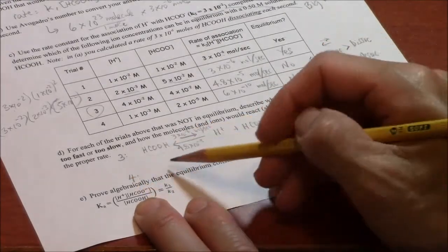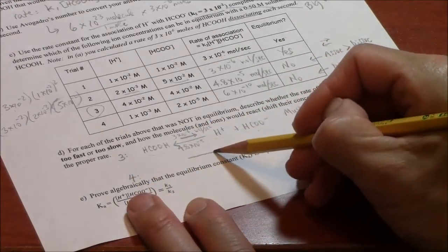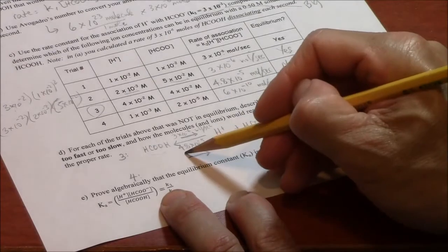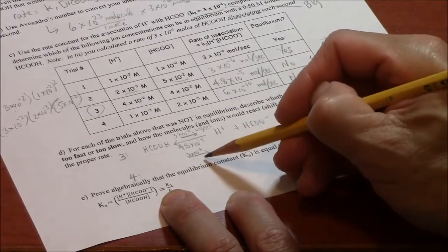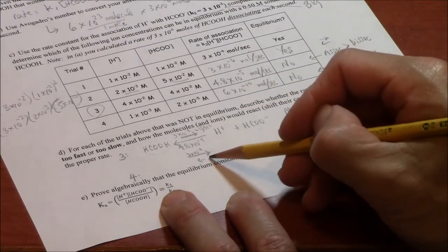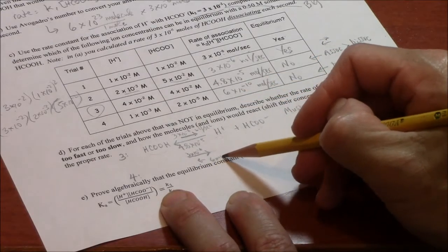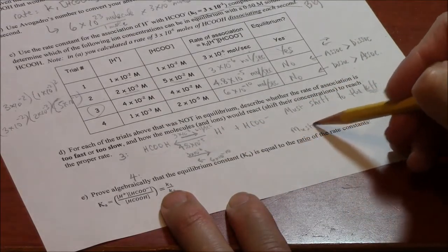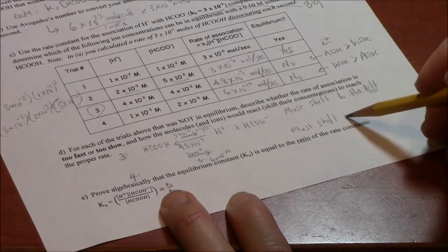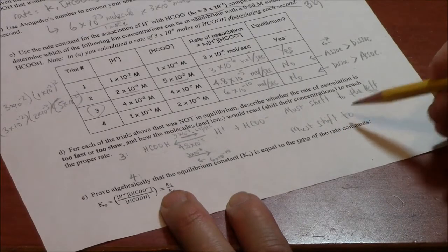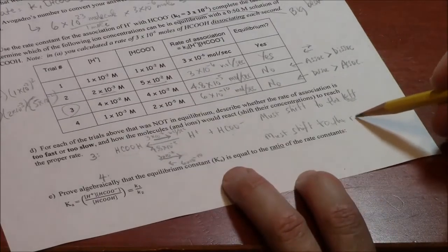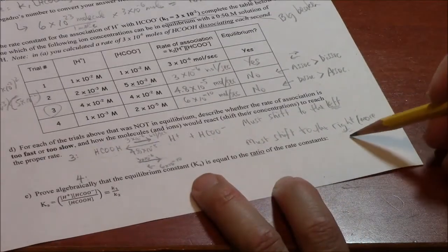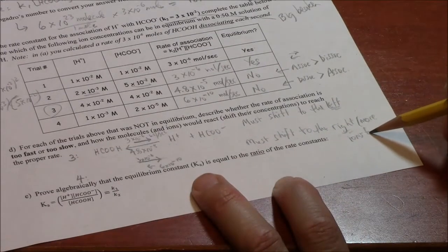For number 4, it's exactly the opposite. The arrow pointing to the right is the same as it ever was. 3 times 10 to the minus 6, going to the right. Arrow going to the left, however, is puny. Only 6 times 10 to the minus 10 is coming back. And therefore, this one must shift right. To the right, that produces more ions to reach equilibrium.